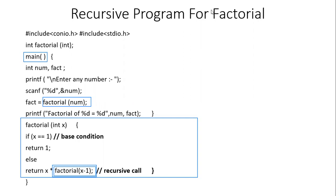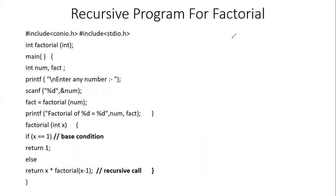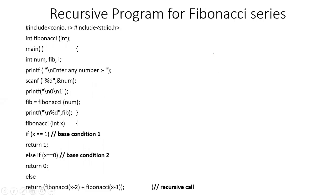Next is a recursive program for the Fibonacci series. The Fibonacci series starts with 0 and 1. The next element is always the sum of the last two elements. So: 0, 1, then 0+1=1, then 1+1=2, then 2+1=3, then 3+2=5, then 5+3=8, then 8+5=13, and so on.